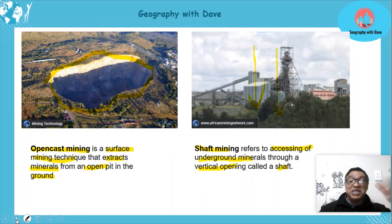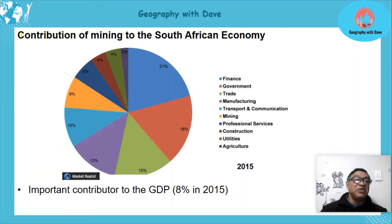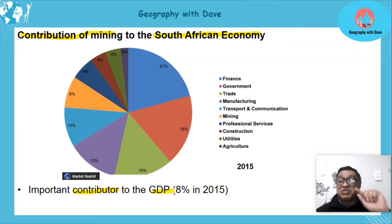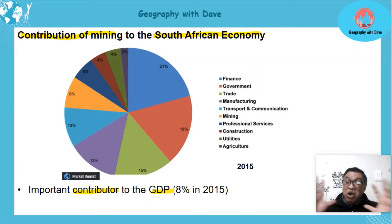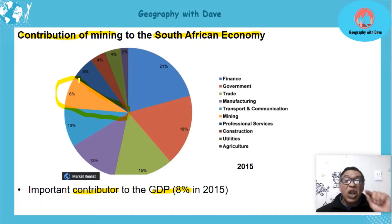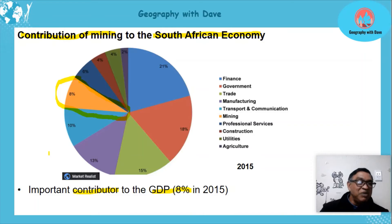Now let's look at the contribution of mining to the South African economy. It is an important contributor to the GDP — the gross domestic product. In your earlier lessons on economics you would have picked up that GDP determines how large the economy is. In 2015, eight percent of our GDP came from mining alone — eight percent is massive.